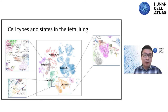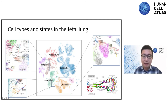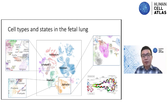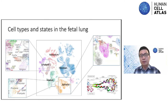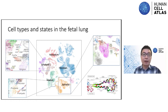Based on our spatial validation data, we can put these together onto a spatial context summarized in a diagram available on our poster. Our atlas not only provides a detailed catalog of cell types and cell states, but also provides a guide for identifying the important transcription factors that regulate cell fate commitment.